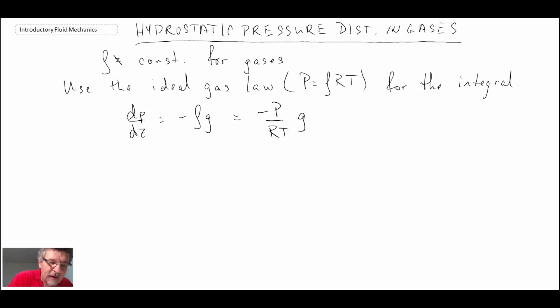We will rearrange this and what we get on the left hand side is an integral from one to two. We are going to have a natural logarithm here. And then on the right hand side G over R, one to two, and R is the ideal gas constant for whatever gas we are dealing with. In this case we are talking about air typically.